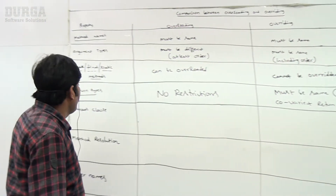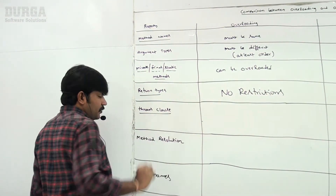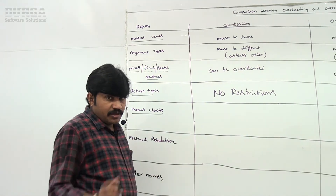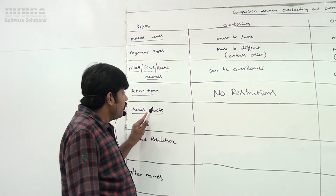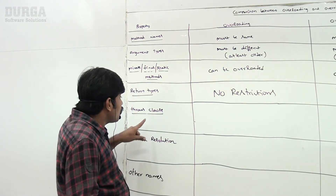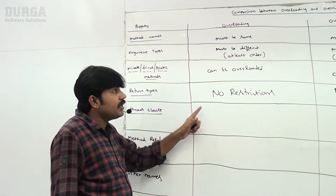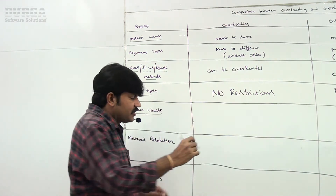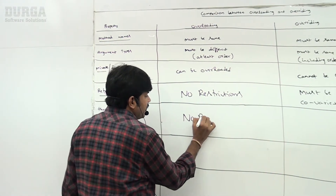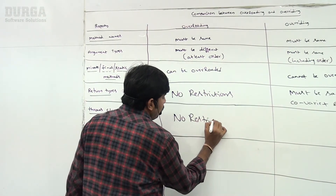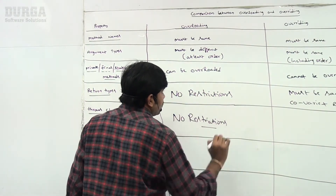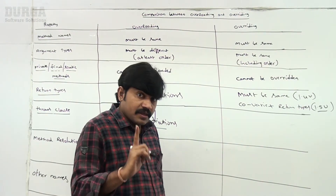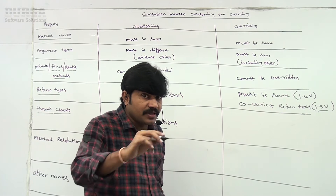Next is the throws keyword. In overloading, there are no restrictions on what exceptions are thrown. No restrictions at all.